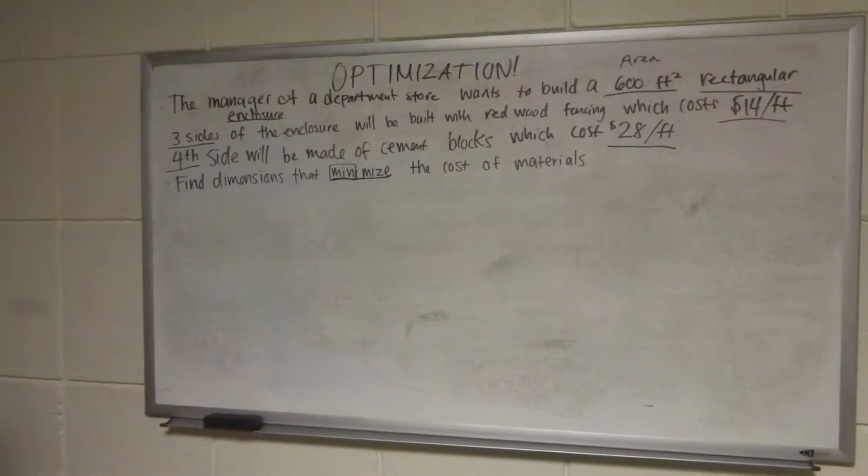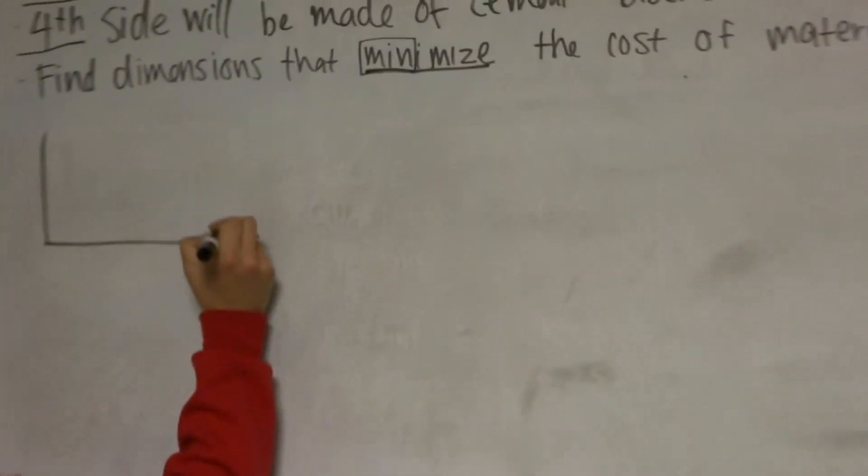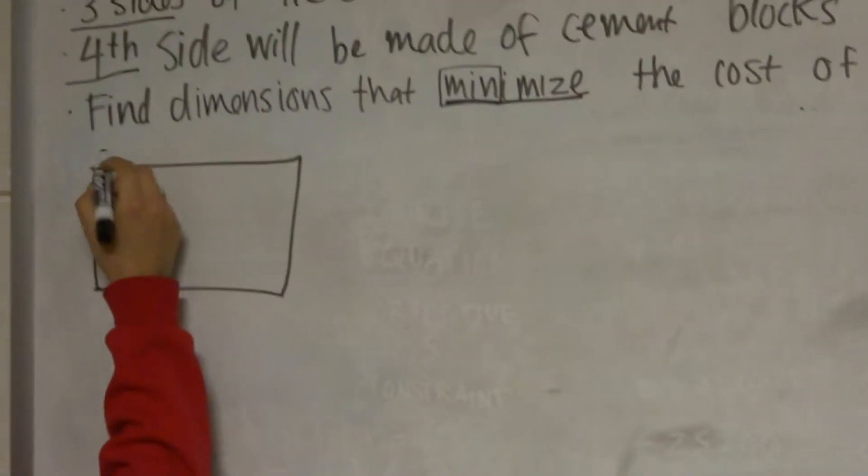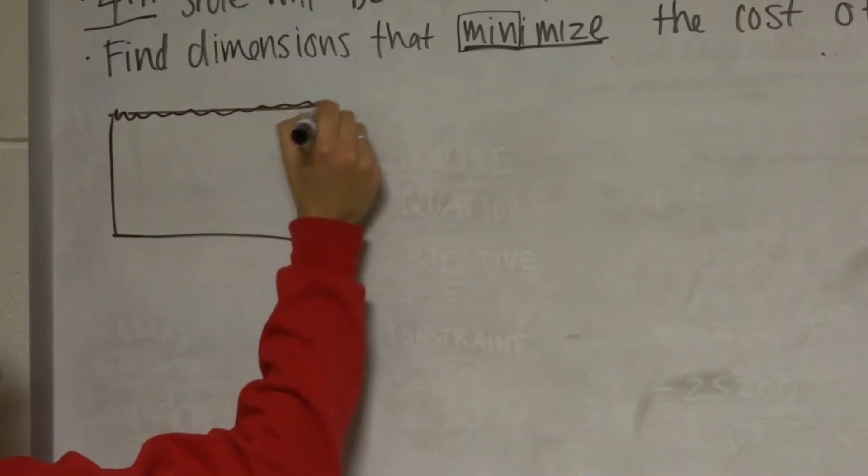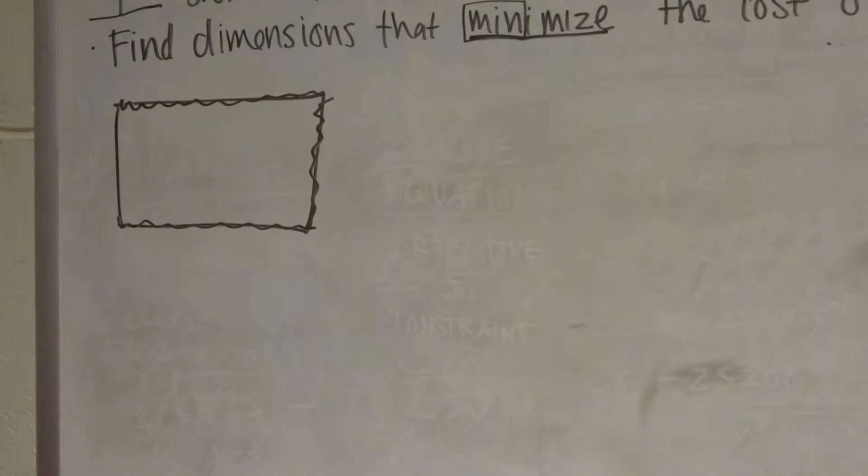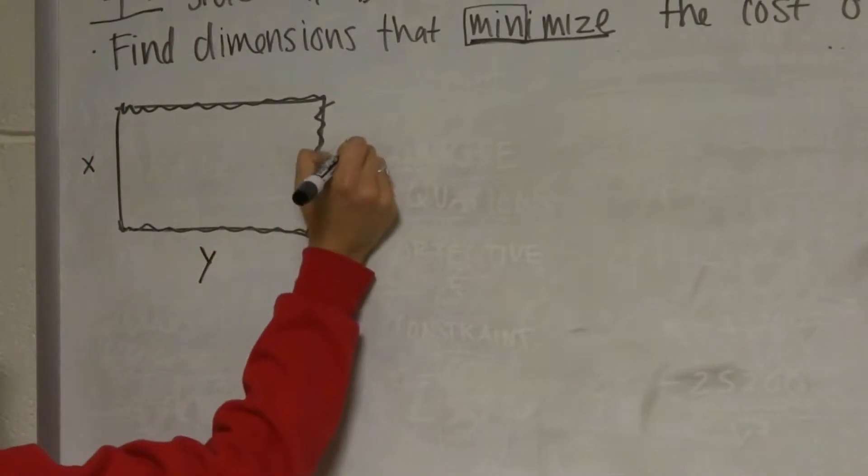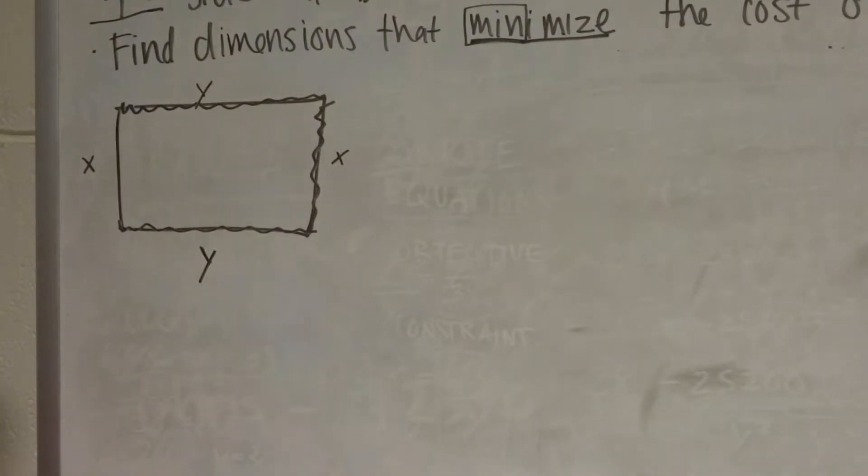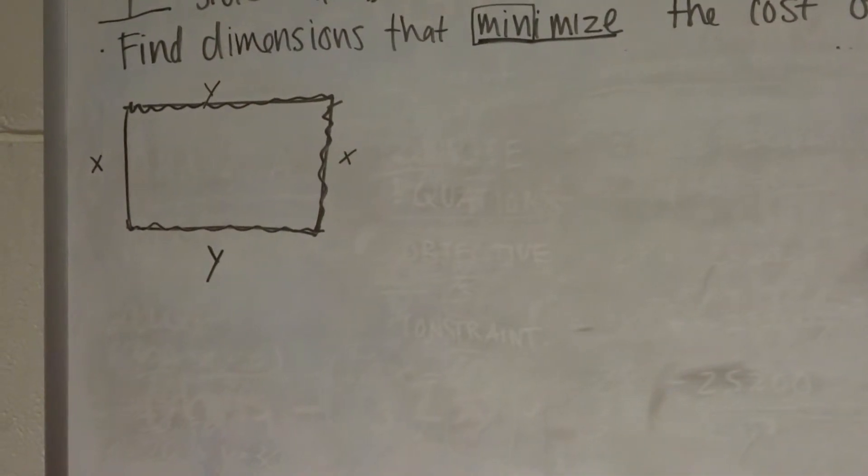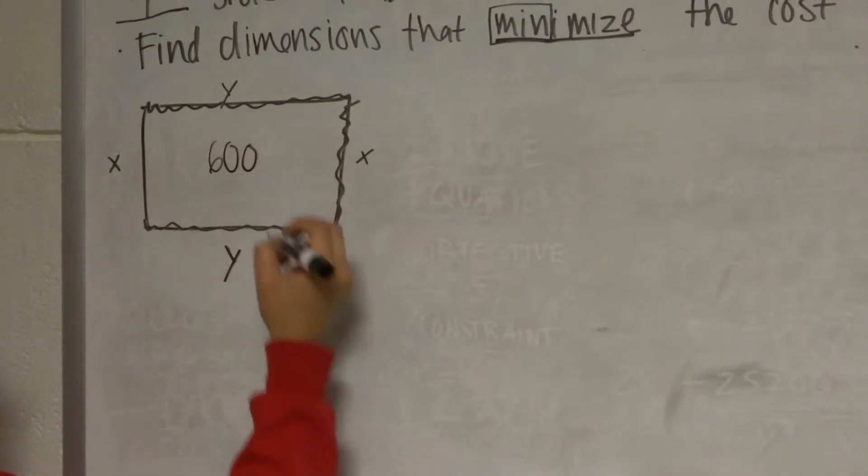We want to find the dimensions that minimize the cost of the materials. So, as I said before, step one is draw a picture. We want a rectangular enclosure and three of the four sides will be made of this redwood fencing. We're going to call the short side x and the long side y, which makes these sides x and that side y as well.